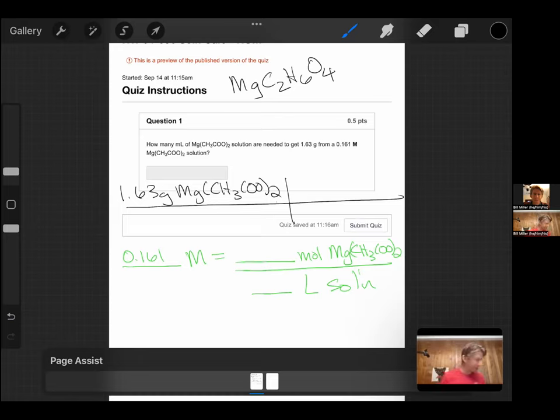Magnesium is 24.3 plus two times 12.01, plus six times 1.008, plus four times 16. I get 118.4.